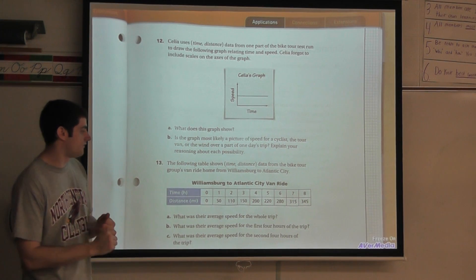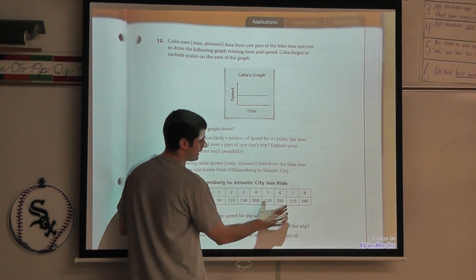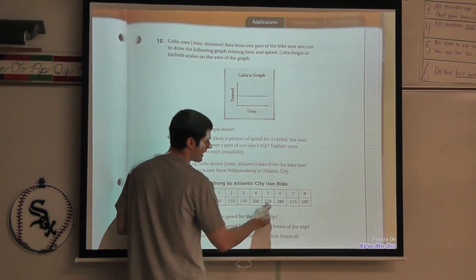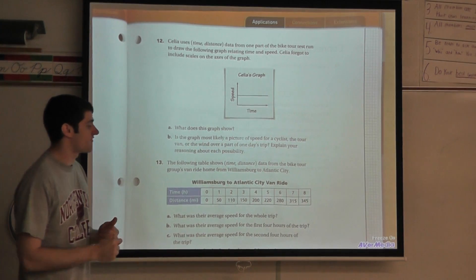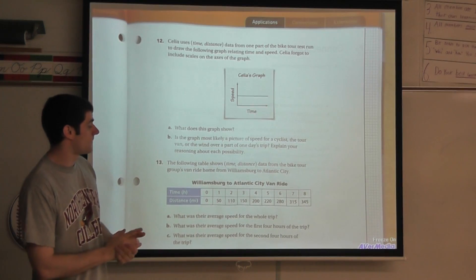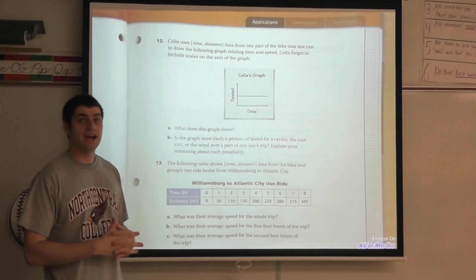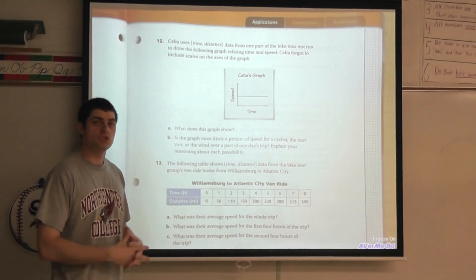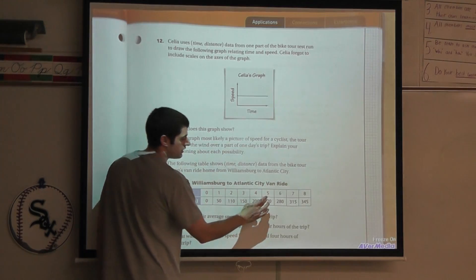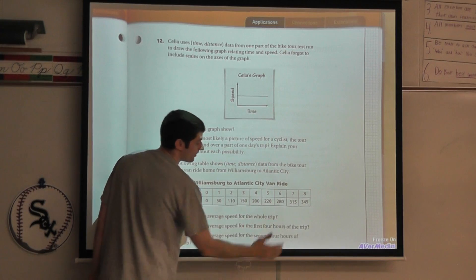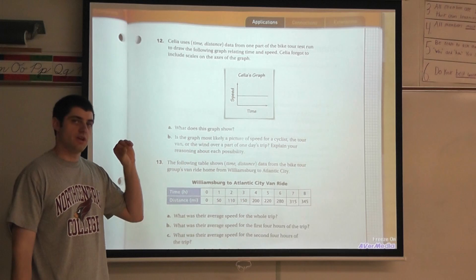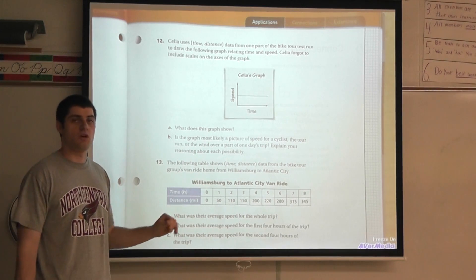Maybe they're well rested still, it's the beginning, it's the morning, maybe they had some downhills, maybe the wind was at their back, maybe it was nice sunny weather, so their rate was a little bit faster in this first four hours and it was 50 miles per hour. And then lastly, part c, what was their average speed for the second four hours of the trip? Now I'm going to look at hours five, six, seven, and eight. From 200 to 345 they traveled 145 miles in that four hours. If I take 145 miles divided by four you'll come up with 36.25 miles per hour.